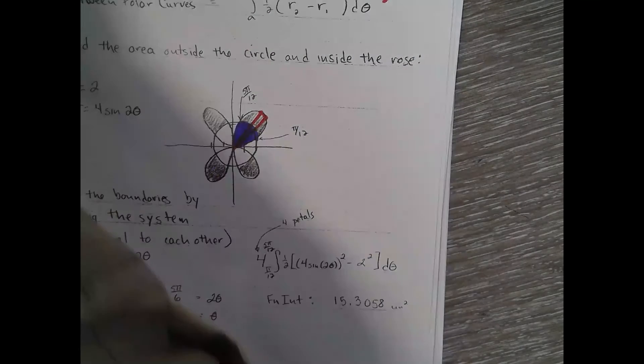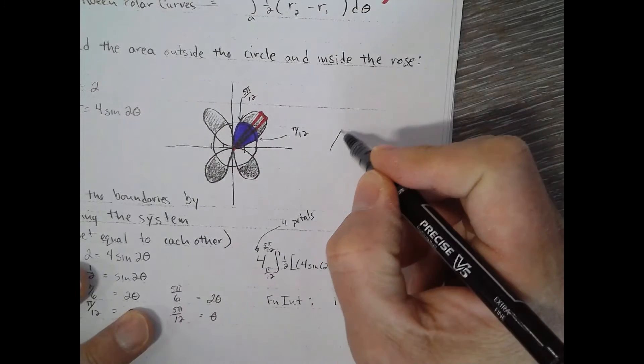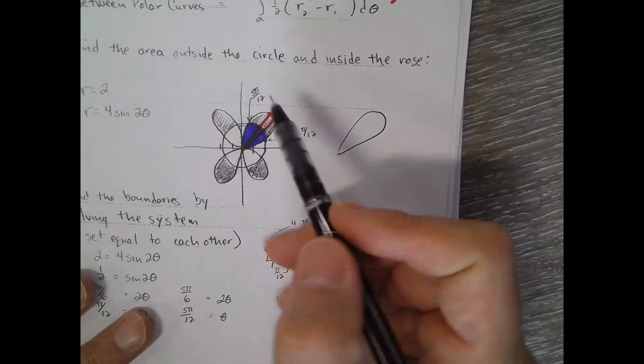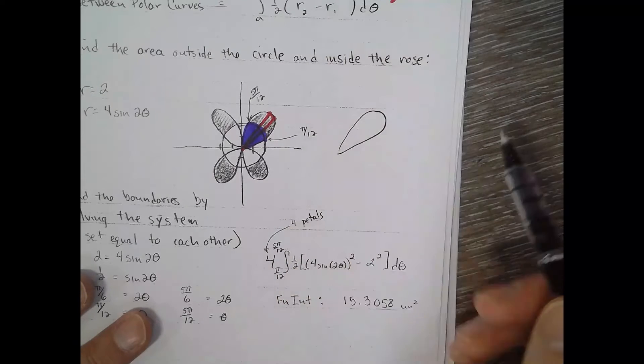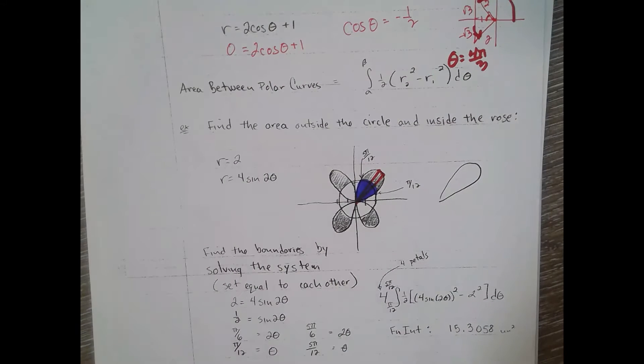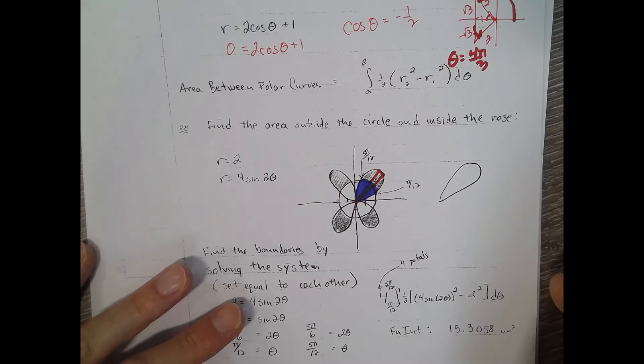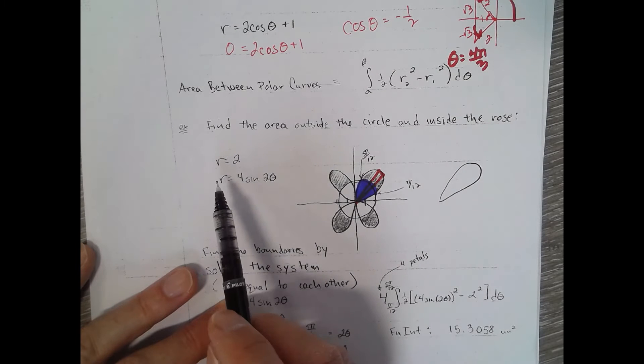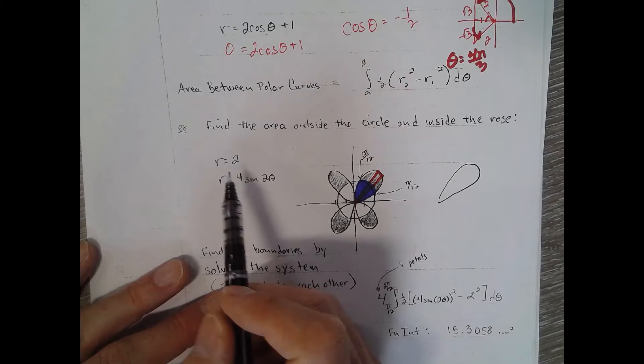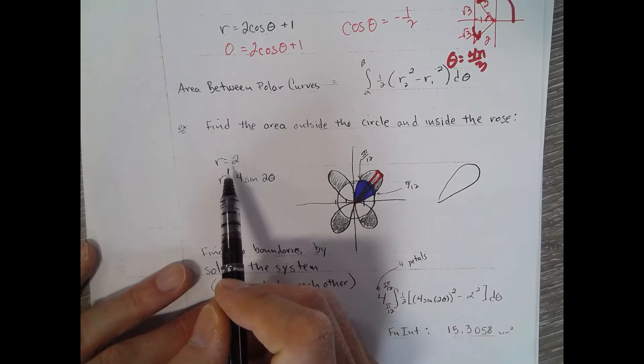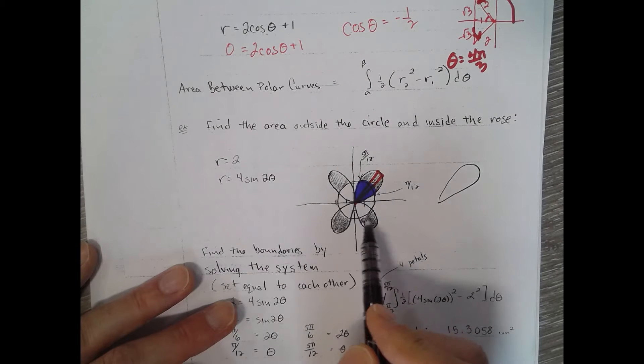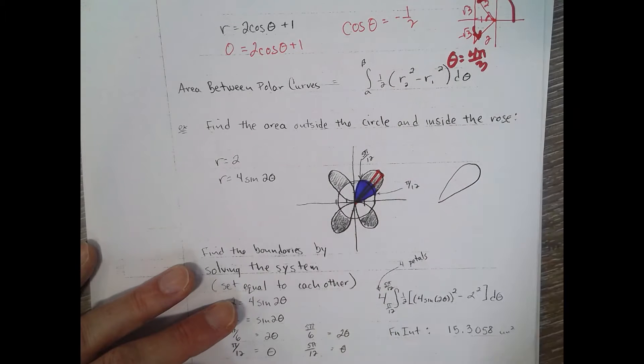So if I was trying to find the area of the whole petal here, what would be my integral to find the area of that whole petal there? Which of these two equations do we use, R equals two or four sine two theta? The bottom one, right. Because r equals two is all points that have a distance of two, that's just a circle. And r equals four sine two theta, that must be the flower petal problem.